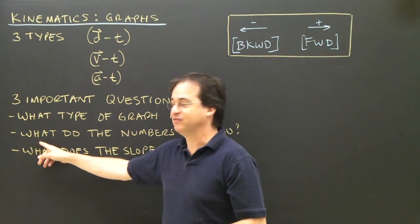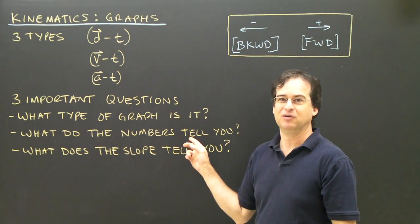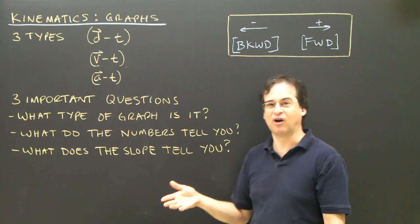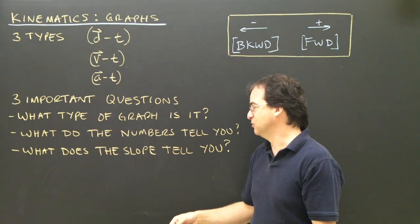Then we're going to look at the graph and say, what do the numbers tell you? We'll look at it and say, at this time, the object is doing this, and that will help us describe what the object is doing.